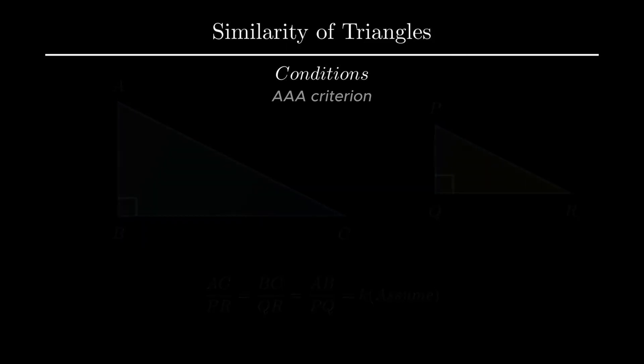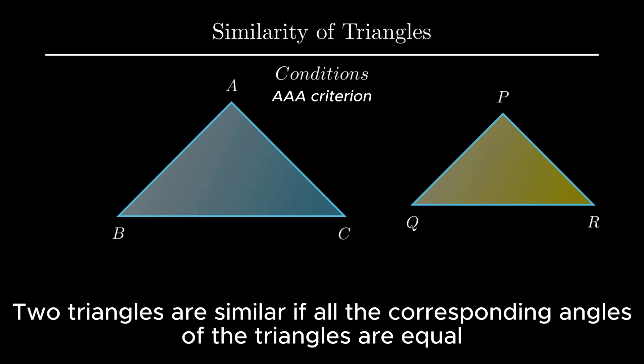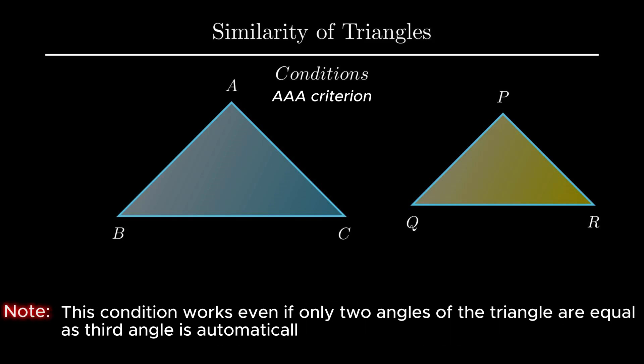Second condition of similarity is AAA, i.e. angle-angle-angle, that states if all the corresponding angles of two given triangles are equal, then the triangles are said to be similar. This condition of similarity also works even if two corresponding angles of the given triangles are equal. Since two angles of the given triangle are equal, therefore by interior angle sum property of triangle, the value of the third angle is always bound to be equal.